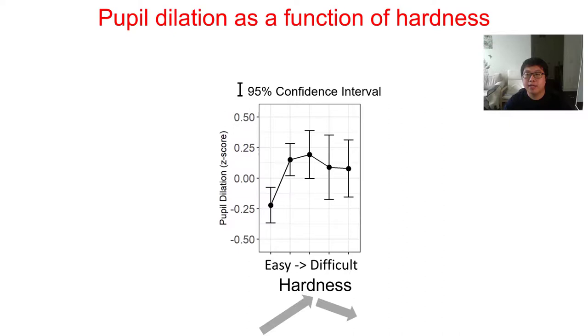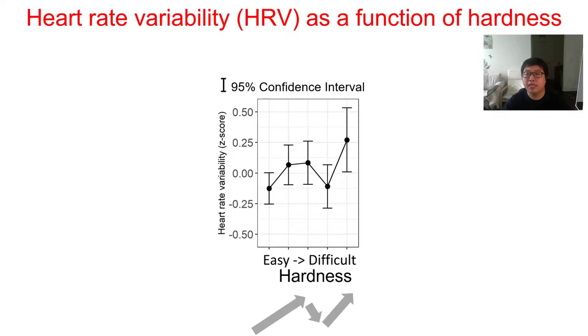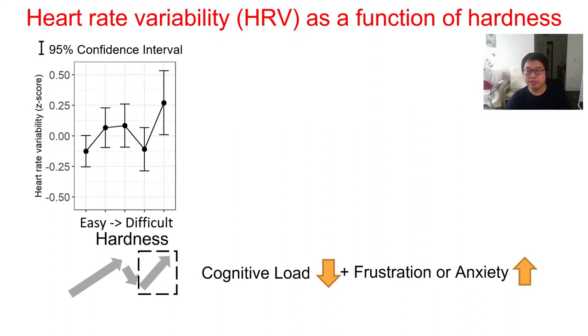Following the literature, we also collected the pupil dilation as a proxy measure of cognitive load. The pupil dilation also shared a similar pattern with the EEG and time. Let us then look at the heart rate variability. It is also a commonly used measure for cognitive load in the literature. The trend was slightly different than the previous ones. It went up and down just like the EEG and pupil dilation, but it went significantly up at the hardest level. This is possibly because that heart rate is also influenced by frustration and anxiety. Participants' cognitive load decreased, but frustration or anxiety was increased, resulting in the overall increase.